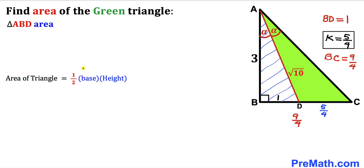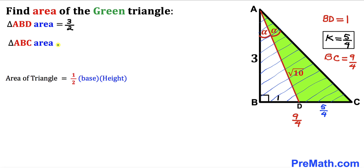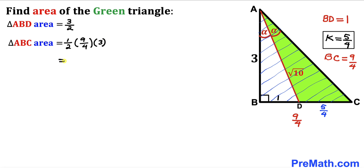Now let's calculate the area of the white triangle ABD using area = ½ × base × height. Here base = BD = 1 and height = AB = 3, so area of triangle ABD = ½ × 1 × 3 = 3/2. Next, for triangle ABC: base = BC = 9/4 and height = 3, so area of triangle ABC = ½ × (9/4) × 3 = 27/8.